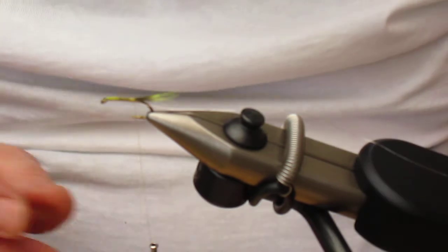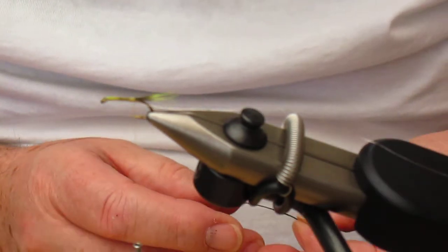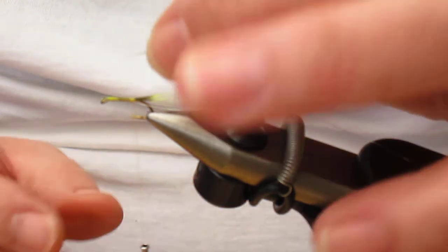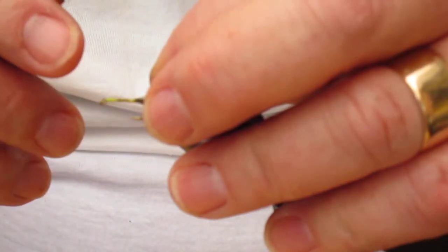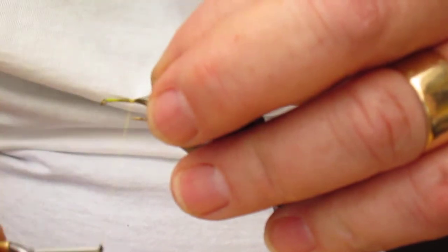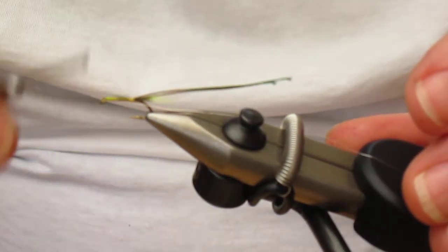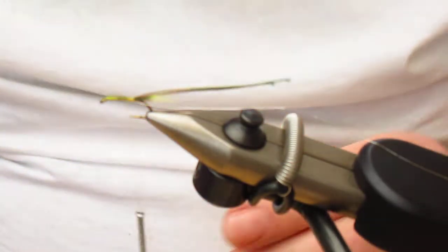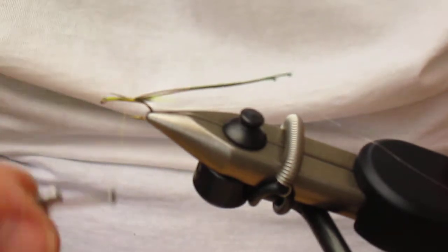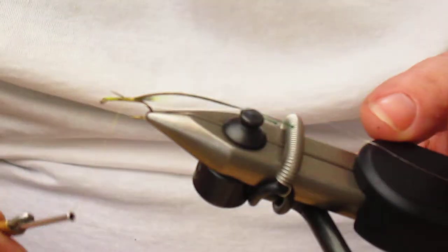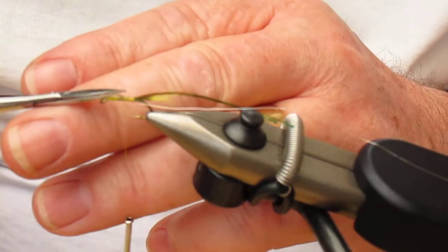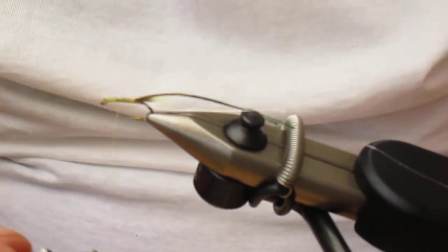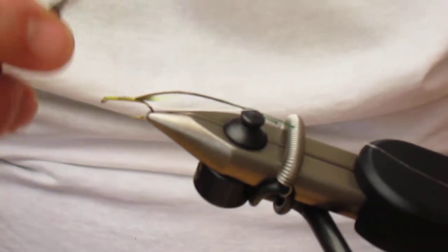Now the body is pheasant tail. Standard pheasant tail is fine, but I have here a dyed green pheasant tail and I'm using two fibers. Again, I'm going to incorporate most of the tips of the pheasant tail into the fly. If they don't lie quite right, there's no problem; they're quite fine so you can snip them off without leaving a lump in the dressing.